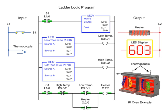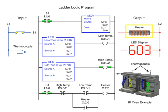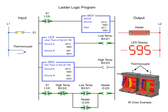Reaching 603 degrees or more, the high temp output is enabled since source A is equal to source B of the greater than or equal to instruction. When the high temp output is true, the heater turns off and remains off until the temperature reaches 597 or lower. The cycle is repeated to maintain the average set point temperature of the oven at 600 degrees Fahrenheit.